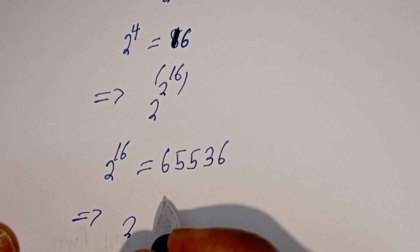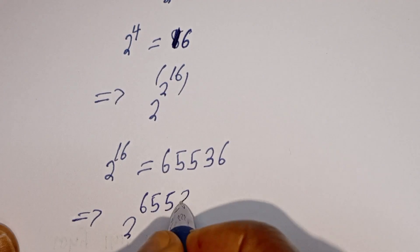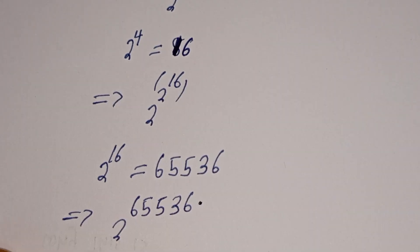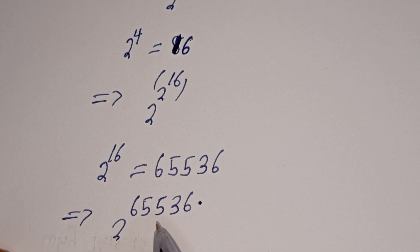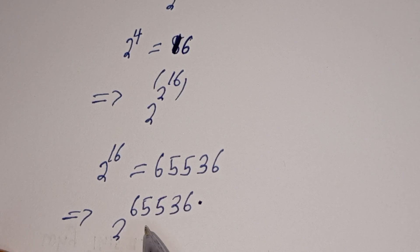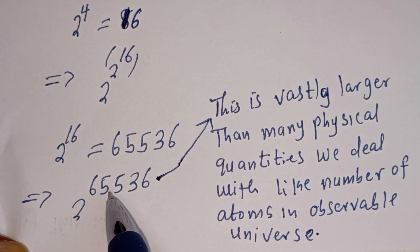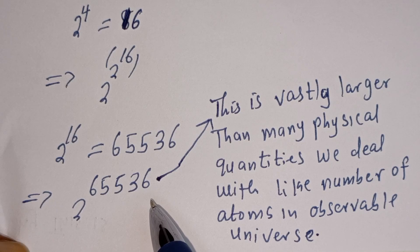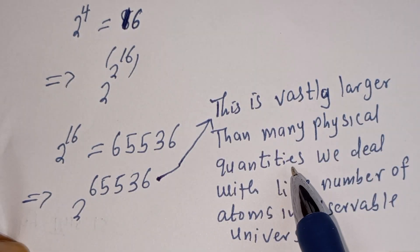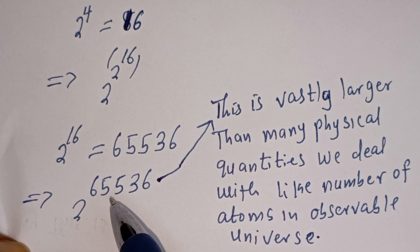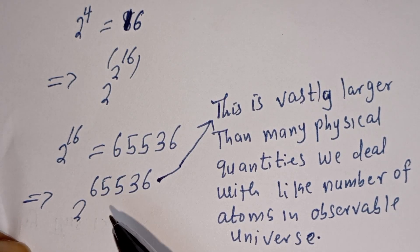Lastly we have two to the power of 65,536. You can see that in order to compute this, it's going to be very large, and of course this is vastly larger than many physical quantities we may deal with, like the number of atoms in the observable universe. So you can see how large this number is going to be — that is why you never learned this in school.